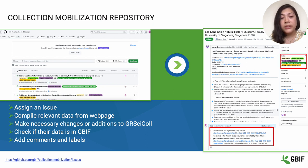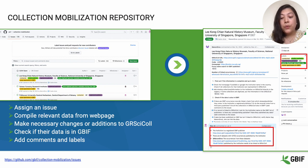Sometimes during our search, we may also find information about collection institutions that are not originally listed in GRSciColl. For such cases, we create a new institution in GRSciColl and add relevant information. We also log an issue in the collection mobilization repository in GitHub.